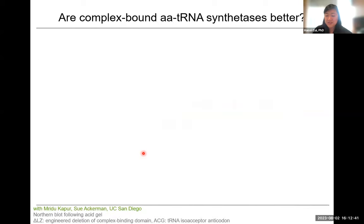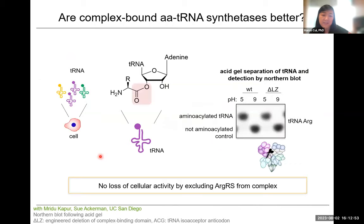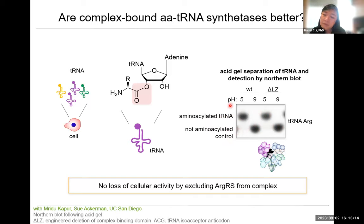The question becomes: does this actually affect the enzymatic activity of ArgRS? To answer this, we isolated tRNAs and looked at the aminoacylation status using Northern blot following acid gel separation. If the amino acid is attached, you see a shift in size — the aminoacylated tRNA runs a little higher. In both wild-type and the delta-leucine zipper cell line, where ArgRS is no longer in the multisynthetase complex, almost all the tRNA is charged. This is consistent with other tRNA sequencing studies in mammalian cell lines, where the majority of tRNAs are always aminoacylated. Even losing about 90% of ArgRS doesn't really affect the aminoacylation status.